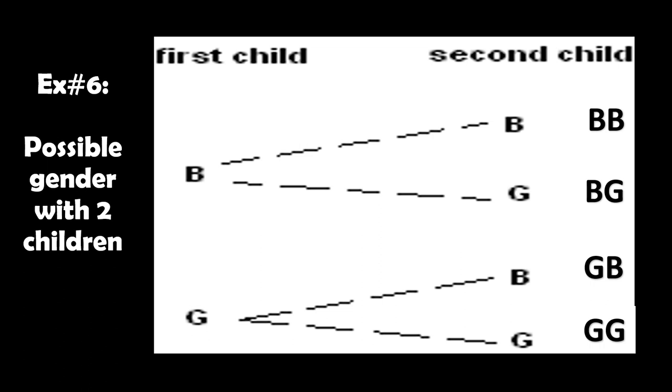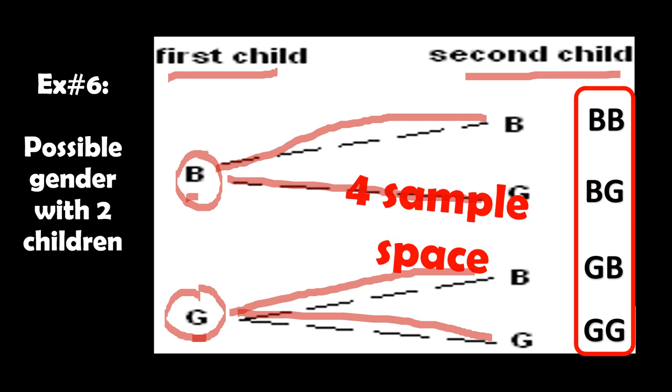Example number six: possible gender with two children. When a child is born, the possible outcome is either a boy or a girl. For the first child, two outcomes: boy or girl. For the second child — whether the first was boy or girl — again either a boy or a girl. So the sample space for the possible gender with two children is four.